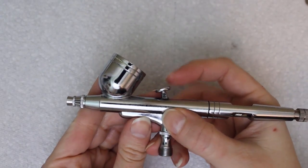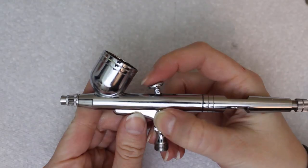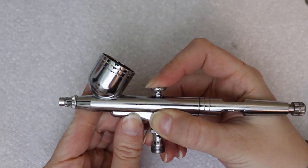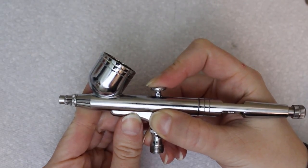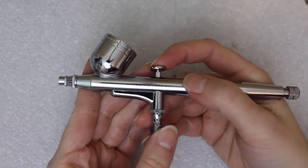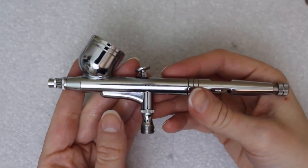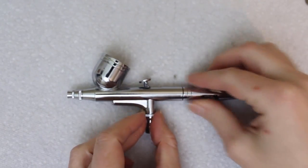The other big difference is that a brush can either be single action or double action. Mine is double action, which means I can press the trigger down to control the amount of airflow, and pull back to control the paint flow. A single action airbrush only allows you to control the paint flow. You pull the trigger back and it manages the airflow automatically. Personally, I love having a separate airflow control because I can use the air to blow dry projects as I'm painting them.